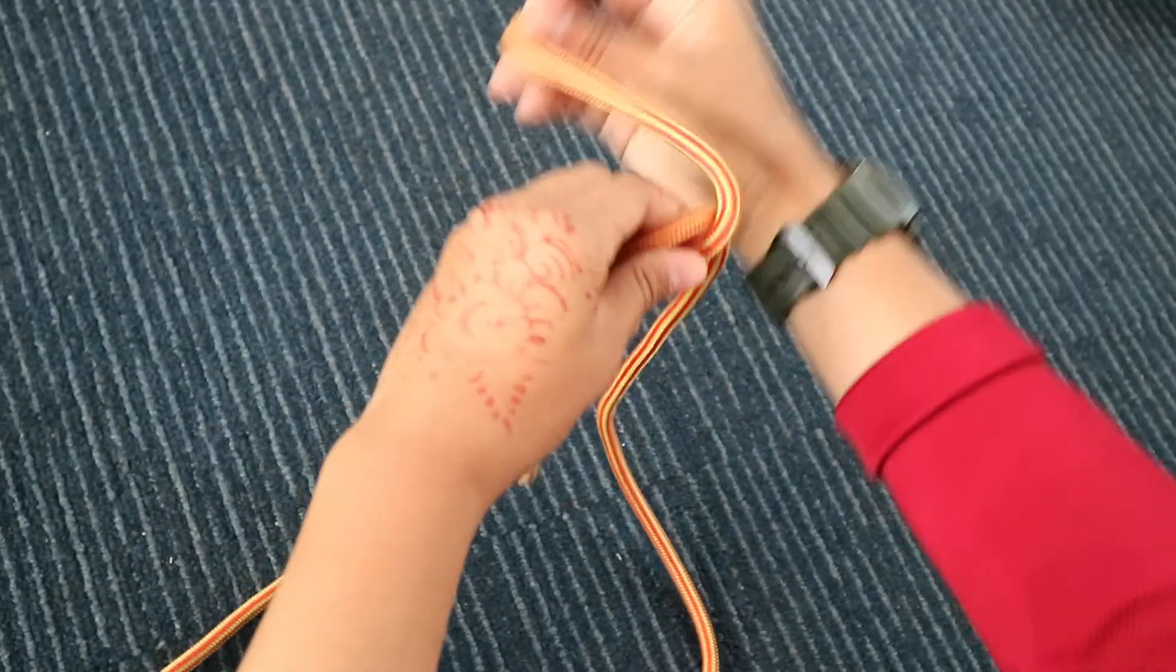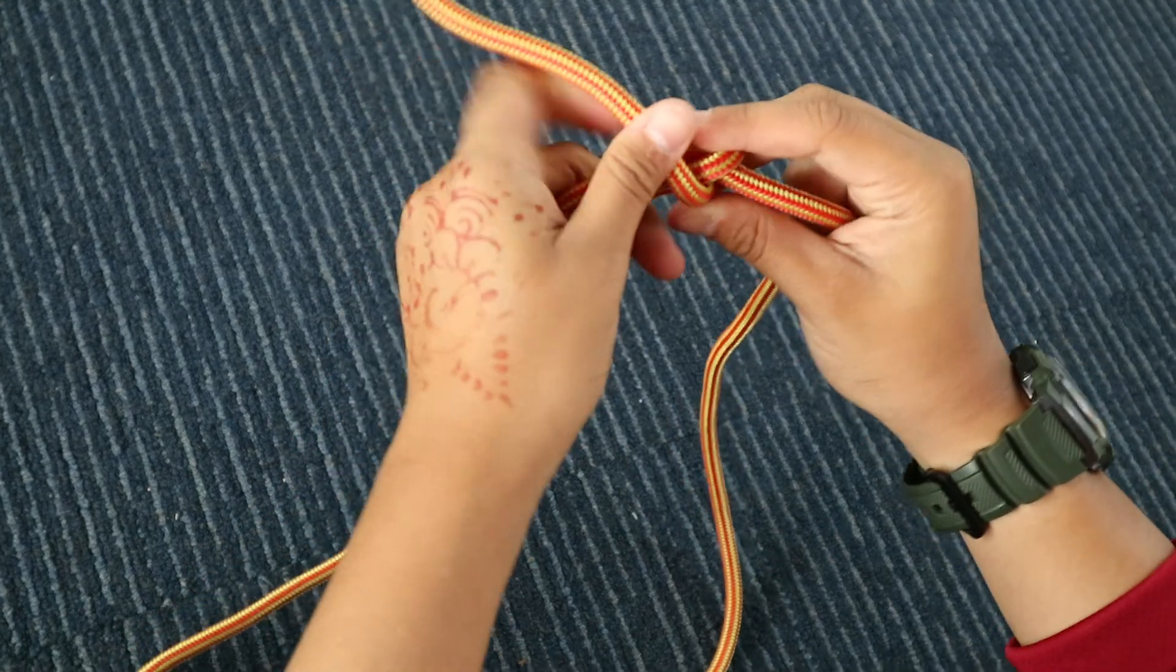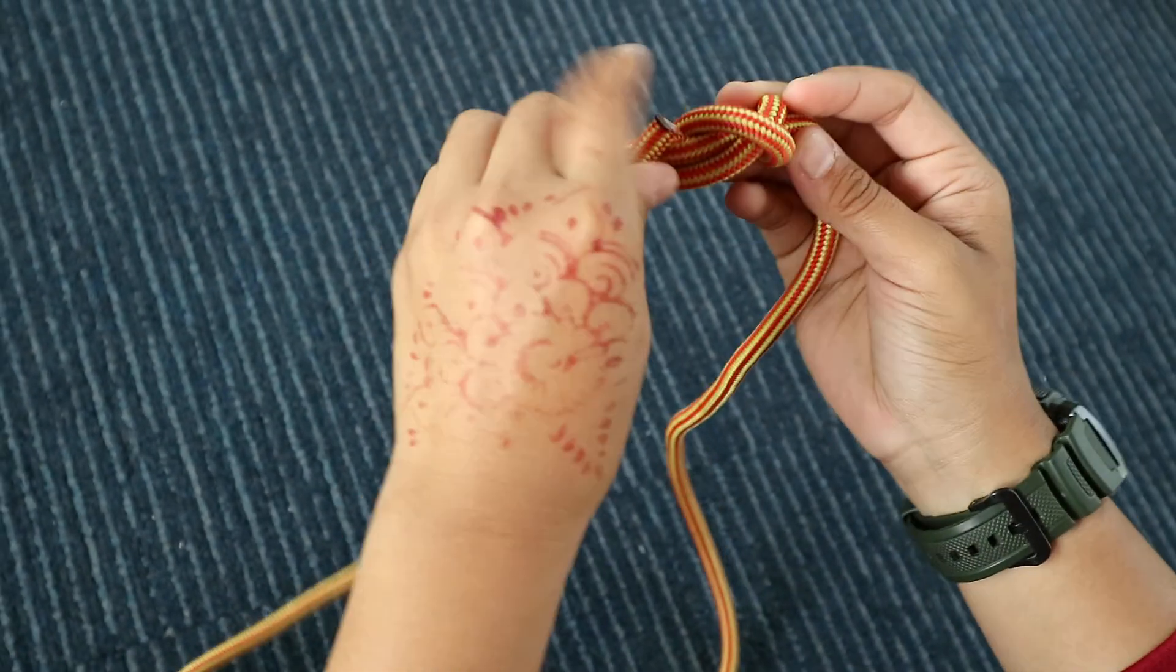Okay, one loop around, another one more that forms an X, and after that go down and through the middle of the X.